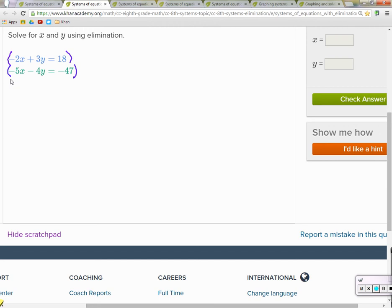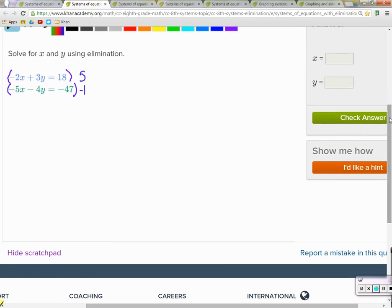So what would you do? What are we going to multiply by? You have to multiply the top by five, and the bottom by negative two. Okay. Negative two. Okay, why are we doing that? Because here's what happens.